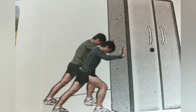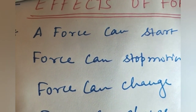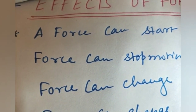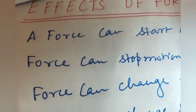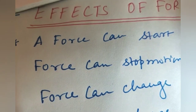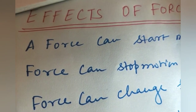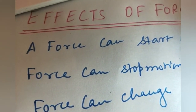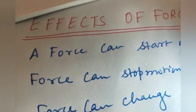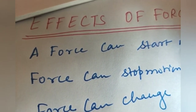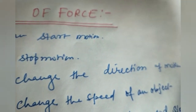The second effect is: force can stop motion. When you catch a ball, you apply force and stop its motion. A fielder in cricket also exerts force on a moving ball and stops it. The same thing happens when you apply brakes on a moving vehicle — the driver pushes the brakes, applies force, and the vehicle stops moving.